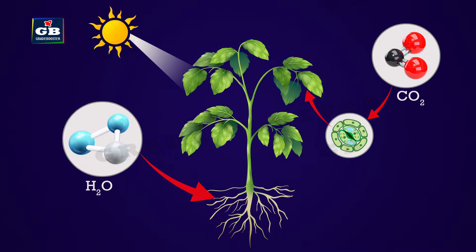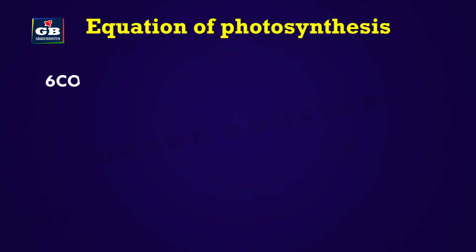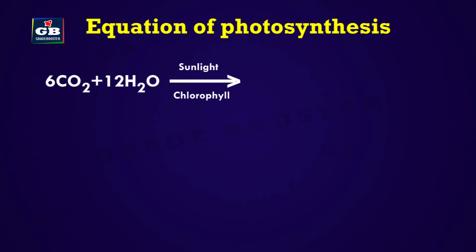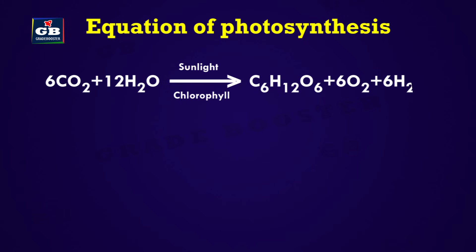Now let us see the equation of photosynthesis: 6CO2 + 12H2O gives rise to C6H12O6 (that is glucose) + 6O2 + 6H2O.